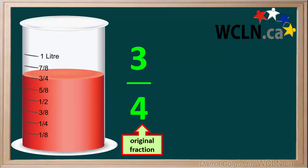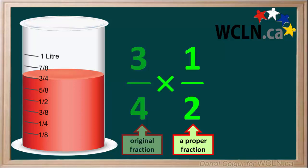Let's do another example. We start with the fraction 3 quarters, which we'll represent by a 3 quarters-full beaker. Now we'll multiply the original fraction, 3 quarters, by the proper fraction, 1 half.